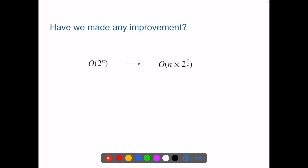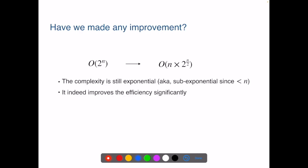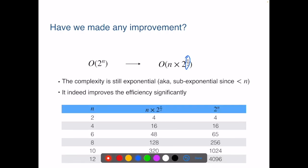Now we compare the complexity of the brute force algorithm, big O of 2 to the power of n, with that of the divide-and-conquer algorithm, big O of n times 2 to the power of n over 2. We call this sub-exponential, since the exponent is smaller than n. It in fact grows much slowly than 2 to the power of n. Here is a table with some examples and values, not even that large. It shows indeed the efficiency is significantly improved.